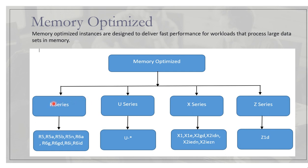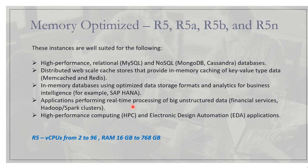Memory optimized instances come in four series: R, U, X, and Z. So whenever you see an instance starting with R, U, X, or Z, these are memory optimized instances. The U series was previously a separate high memory instance type, but Amazon has now included it under memory optimized.